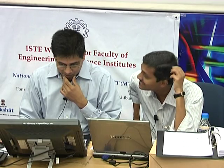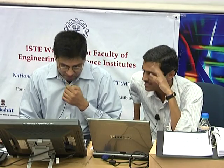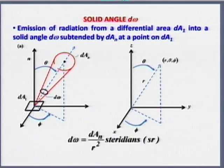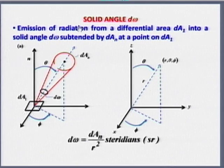The professor responds: a definition cannot strictly be reasoned out, but let us attempt it. With the increase of the radius, for a given dA_n, the solid angle is decreasing. That is the key intuition.